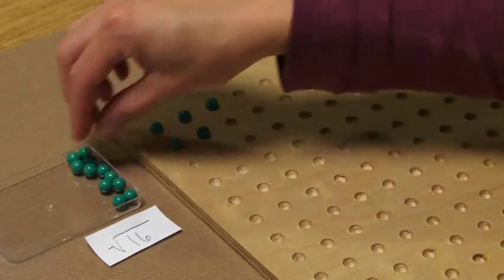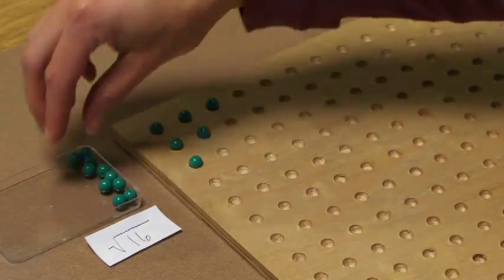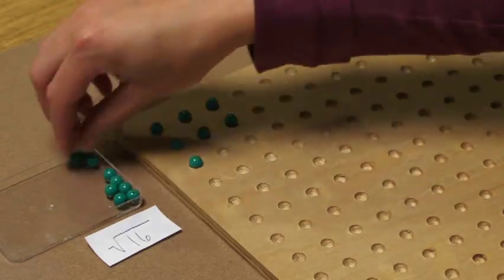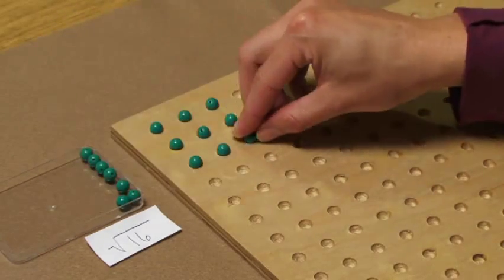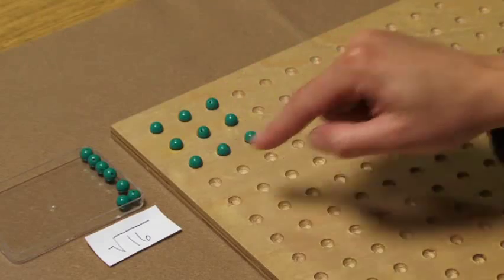Next I'll be going out again, going out and then filling in. This gives us our three square.